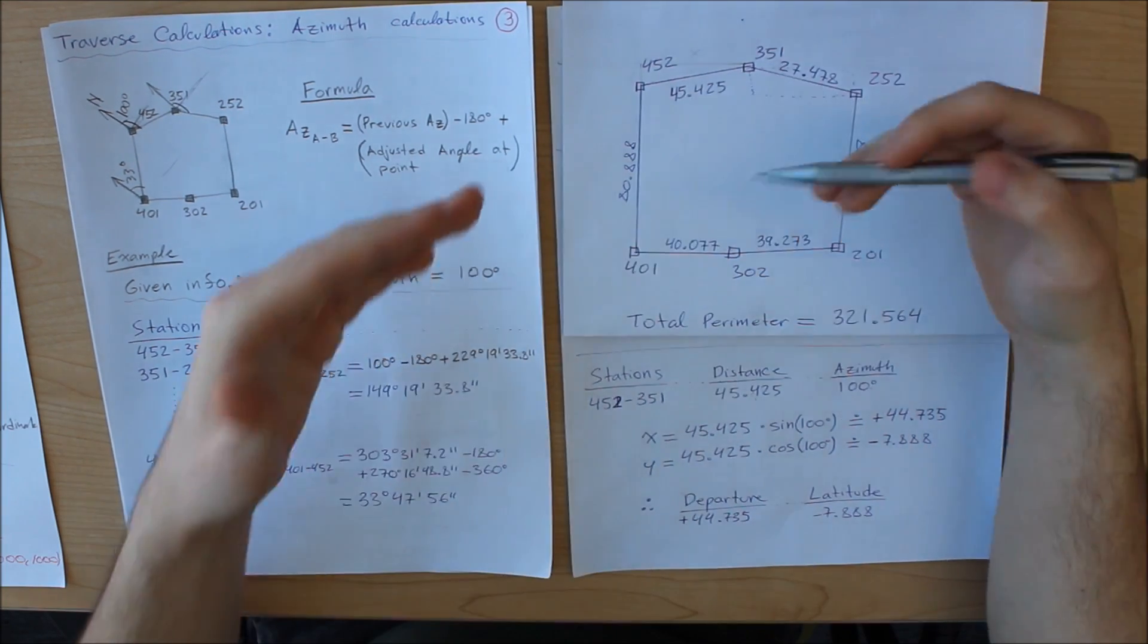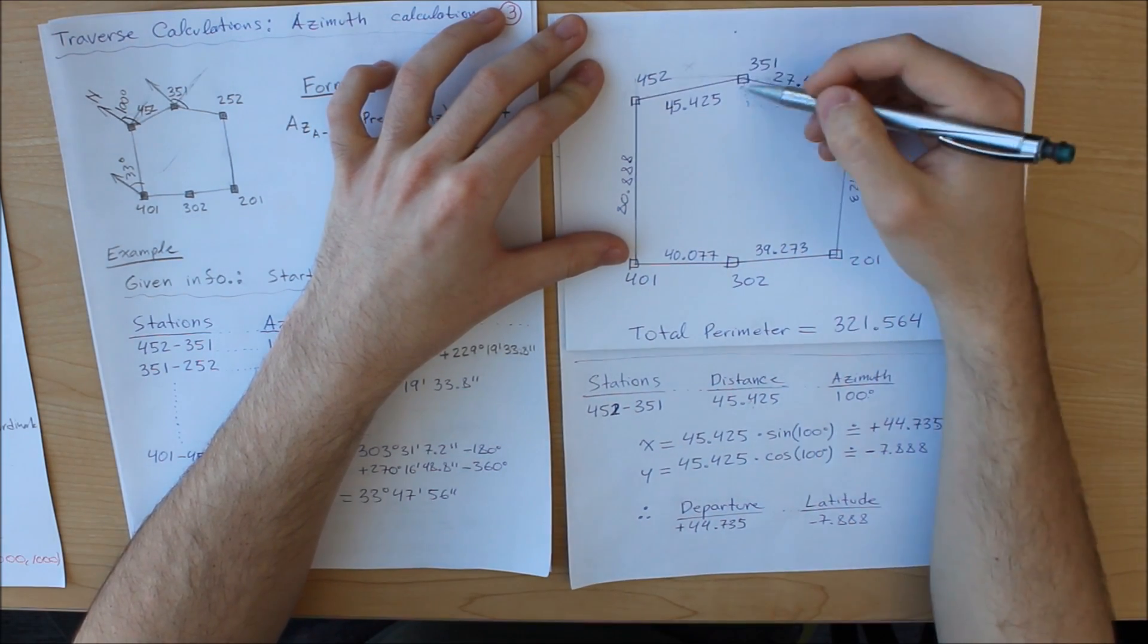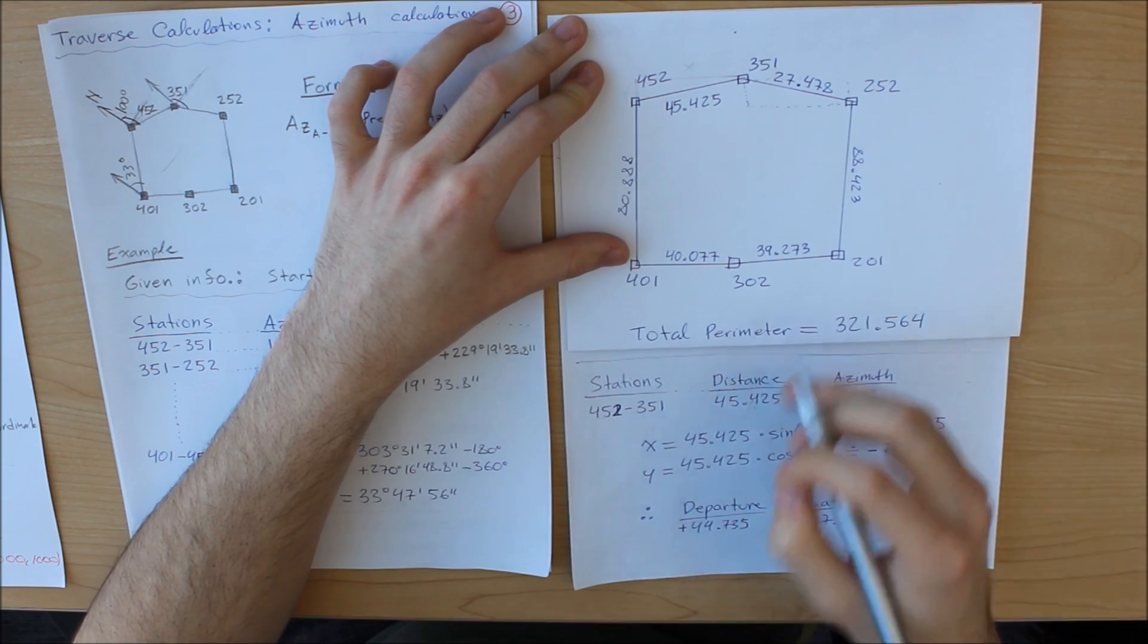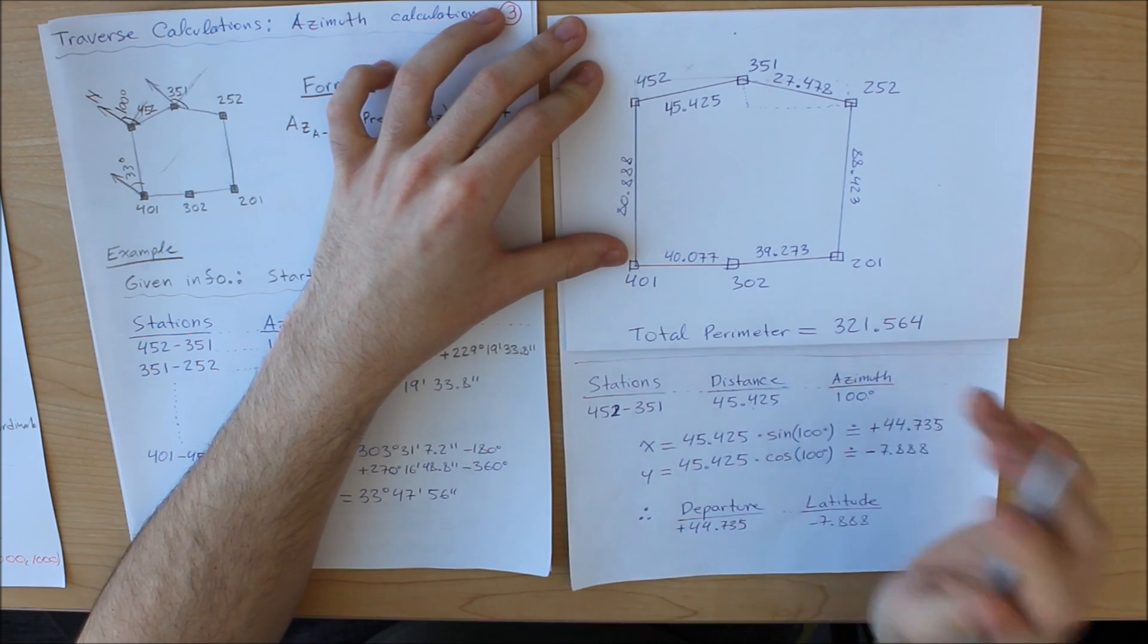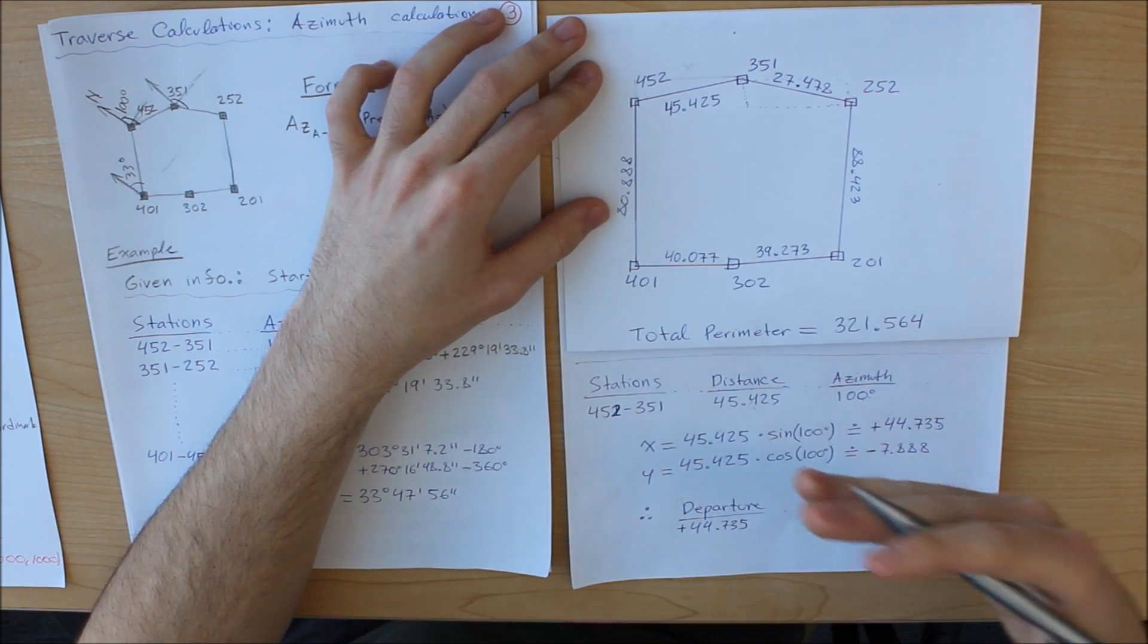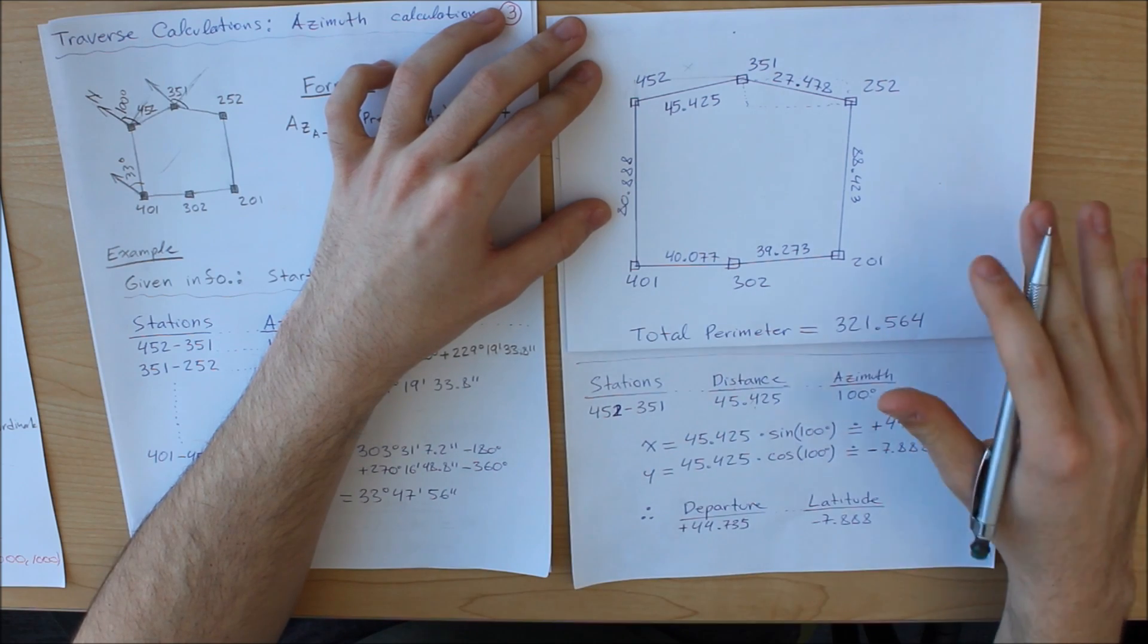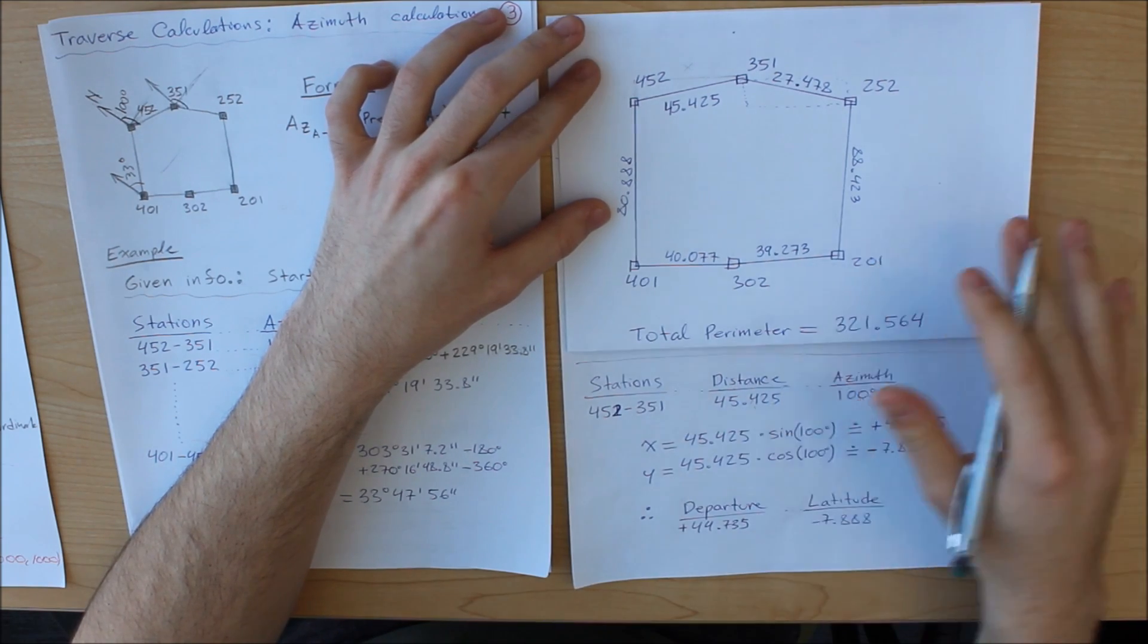So we need to break this down into components. And the reason we do this is we break down each one into components and in the end it should all equal zero. But it's not going to because you will most likely have errors and that's why we are performing this adjustment to proportionally distribute the error through each set of stations.